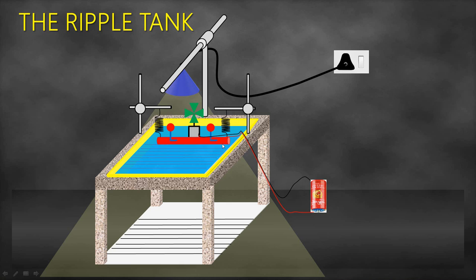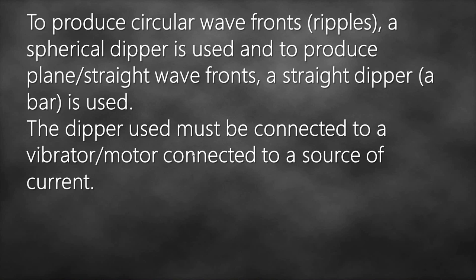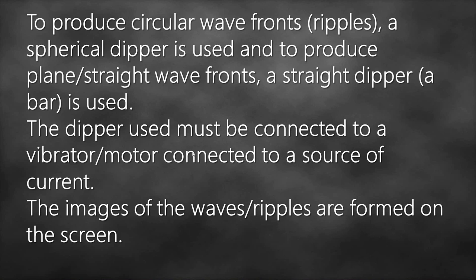This is what we call a straight dipper. If it touches the water, like you can use your ruler to touch a water surface, you will have straight wavefronts. If you use one of the spherical dippers to touch the water surface, you're going to end up with circular wavefronts. The dipper used must be connected to a vibrator or a motor connected to a source of current. The images of the waves or ripples are formed on the screen.